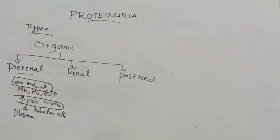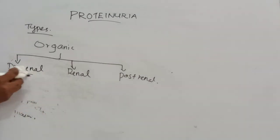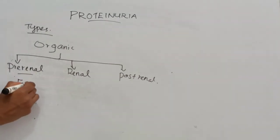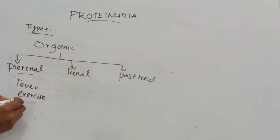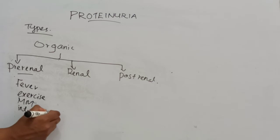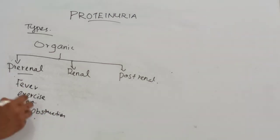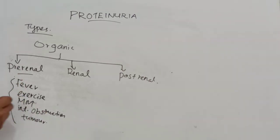Pre-renal proteinuria is not indicative of actual renal disease. It can result from fever, exercise, multiple myeloma, intestinal obstruction, and intra-abdominal tumor.